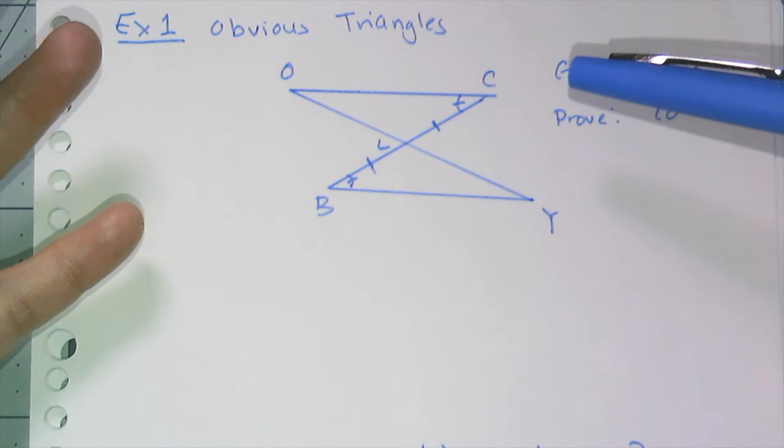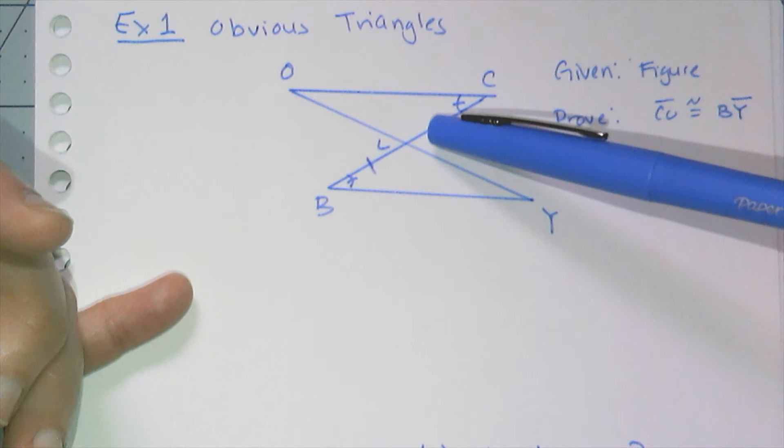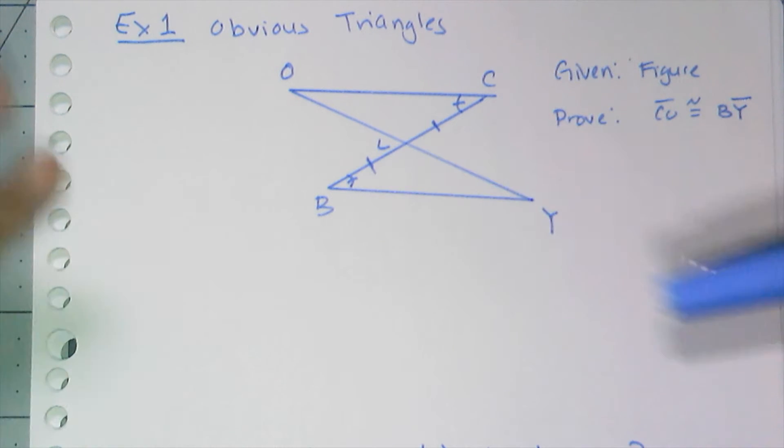So if I look at my figure, I see an angle, a side, an angle, and a side. Oh, so maybe I might want to prove those two triangles are congruent using angle-side-angle, which is the fastest way to do this.